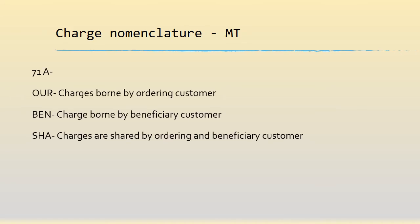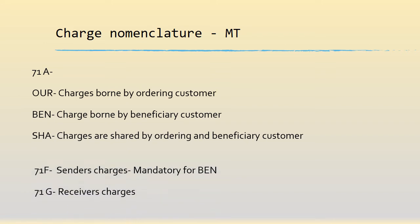What does it translate to in the MT message? We have the all-important tag 71A, which contains either OUR, BEN, or SHA to indicate who bears the charge. We have tag 71F, which contains the actual charge amount — it is mandatory if it is BEN, because otherwise the receiving or beneficiary bank will have no idea how much to deduct for the sender's charges. And then 71G is the receiver's charges.